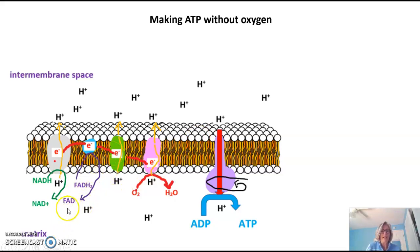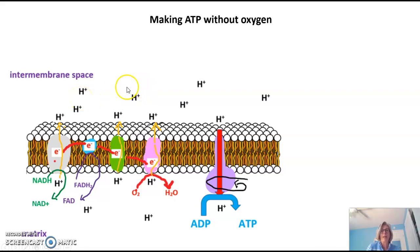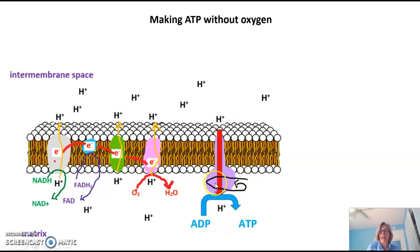The energy in glucose is in the electrons. Those electrons are picked up by NAD and FAD and brought to the electron transport chain. They drop off their electrons there, and the energy of those electrons moving down the electron transport chain is used to pump hydrogen into the intermembrane space, forming a hydrogen gradient. That gradient is then used to make ATP synthase spin when hydrogen moves from the high-concentration intermembrane space to the low-concentration matrix, allowing ADP to add a phosphate and form ATP.